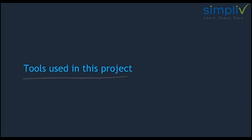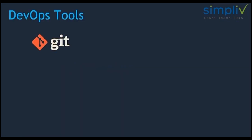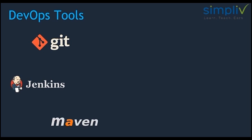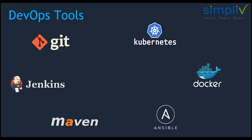Let's see what tools we cover in this program. I am going to use Git as our source code management, Jenkins to create CI/CD pipelines, Maven as a build tool, Ansible for configuration management and deployment, Docker as a target environment to host our applications, and Kubernetes to manage our Docker containers. All of this environment I am going to set up on AWS.